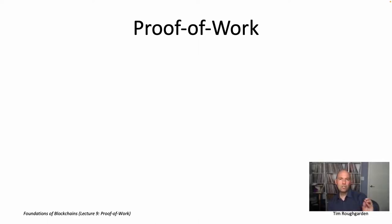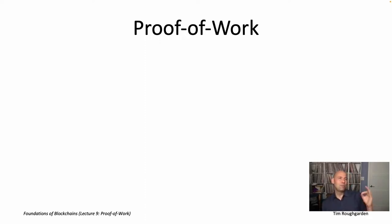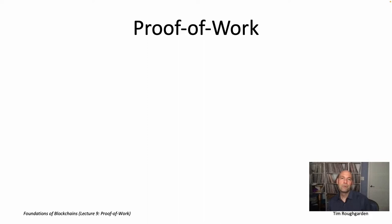I'm going to start this video by briefly reviewing what longest chain consensus looks like, paging it back into memory. I also want to review — at the very end of lecture number eight, I highlighted the essential points of our consistency and liveness analysis of longest chain consensus. I isolated what was really needed for those proofs to go through, in a way to ease the transition to the permissionless setting we're studying in this lecture.